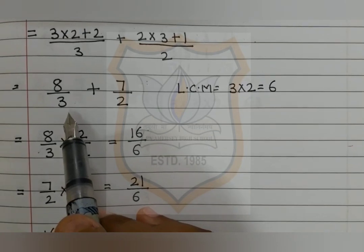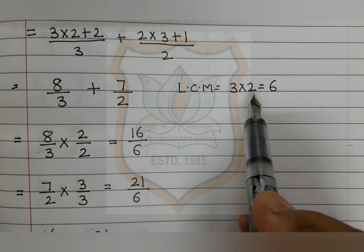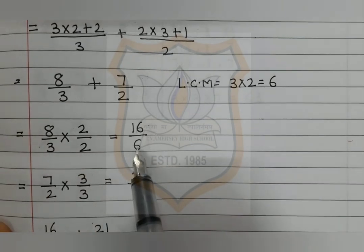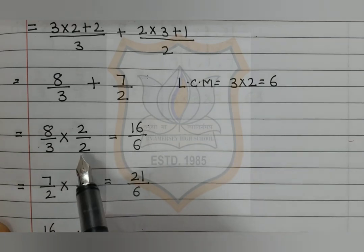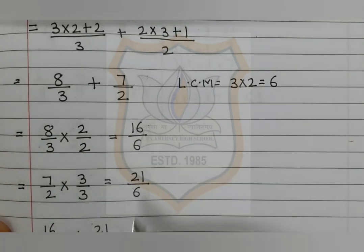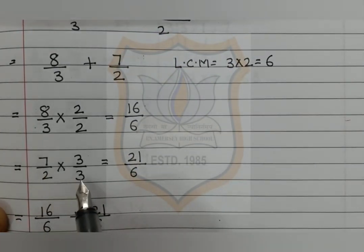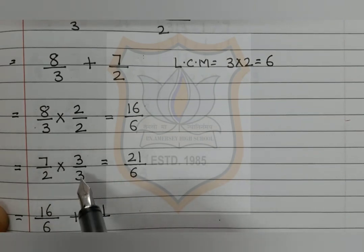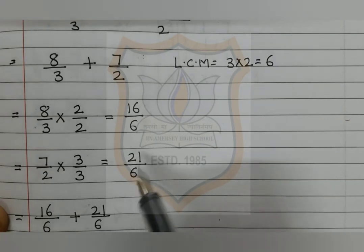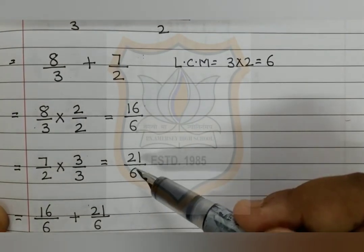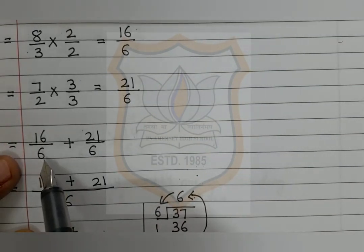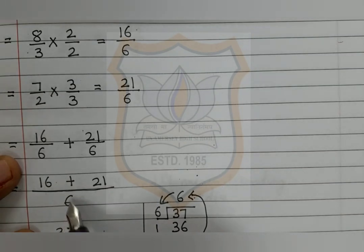We take the LCM of 3 and 2. Since they are prime numbers, their LCM is 3 times 2 equals 6. For 8 upon 3: 3 is multiplied by 2 to get 6, so 8 is also multiplied by 2 to give 16 upon 6. For 7 upon 2: 2 is multiplied by 3 to get 6, so 7 is also multiplied by 3 to give 21 upon 6. Like fractions: 16 upon 6 plus 21 upon 6; taking 6 as common, we write 16 plus 21 above.